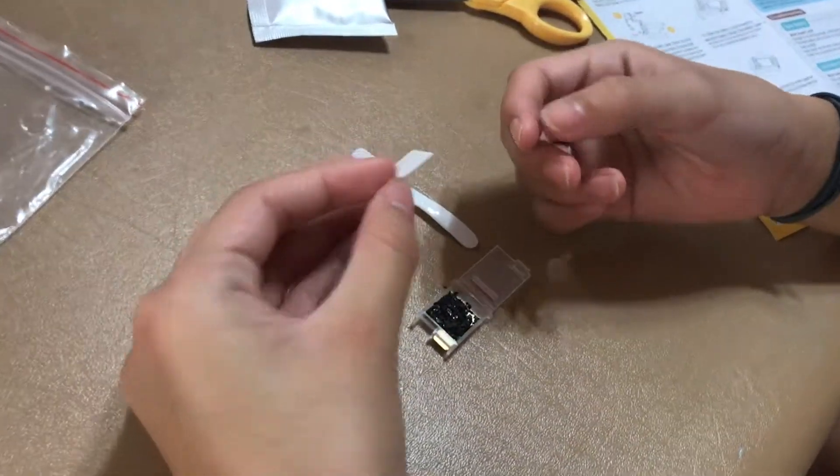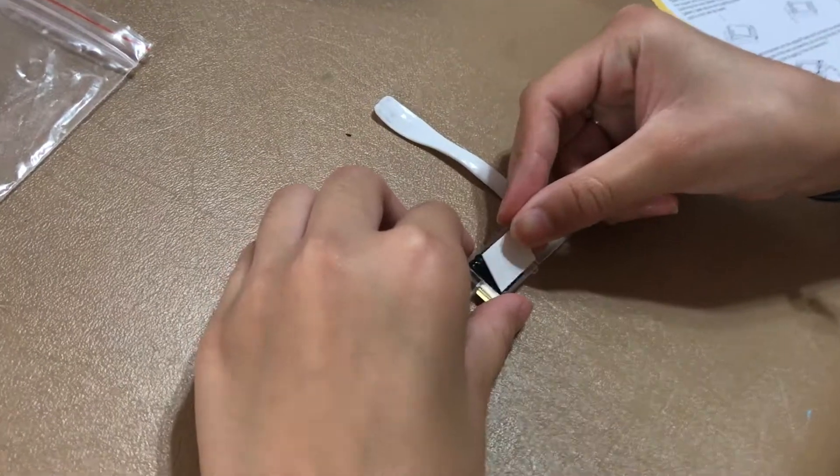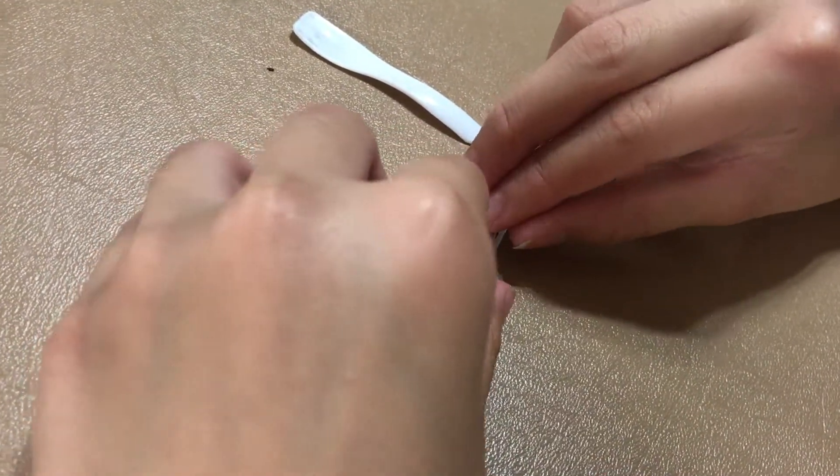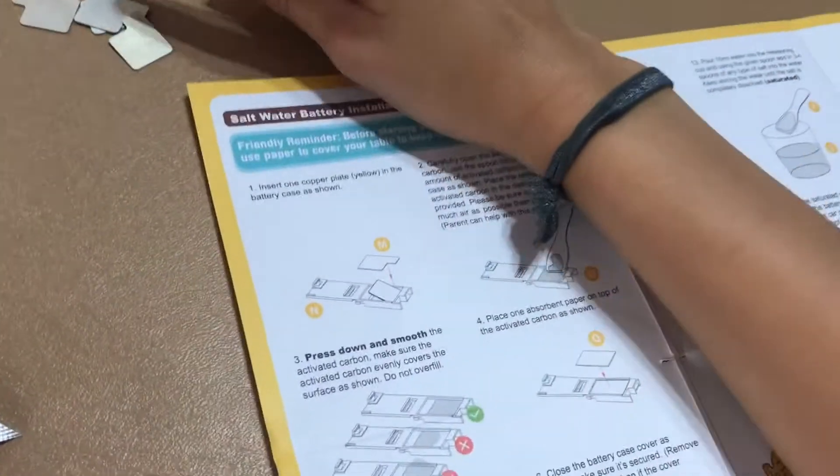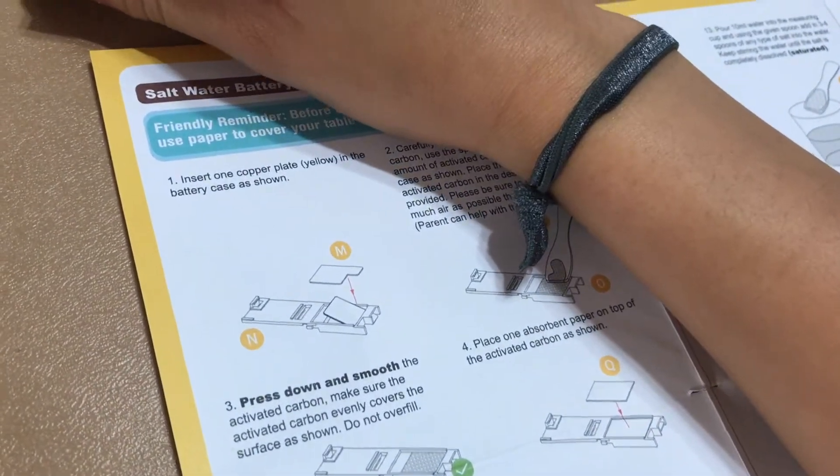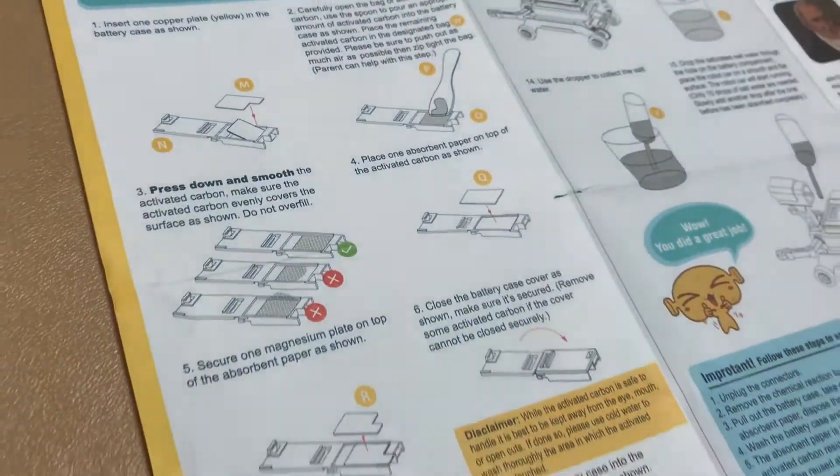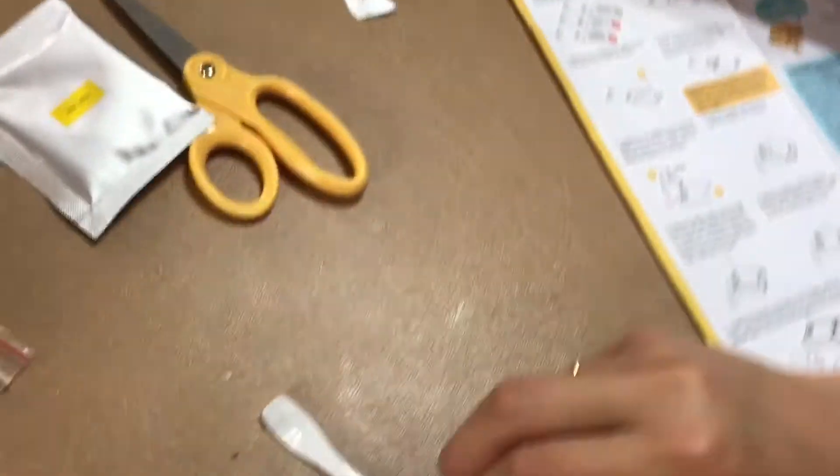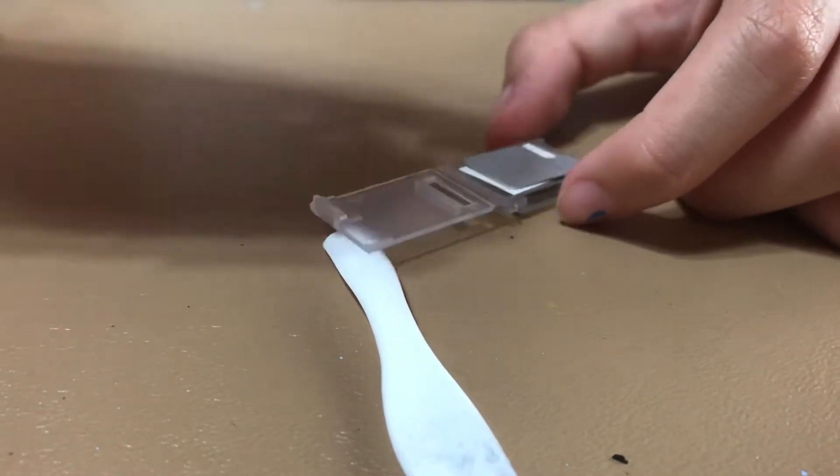And then you're going to put a piece of paper that it comes with. I'm just going to put it right on top of the active carbon. And now we're going to put, is this magnesium? I believe so. And now we're going to put this on top of the absorbent paper as shown. All right. I had to read it. After that, you're just going to close the battery case. Oh, it did it. Yay, we did it. Okay.